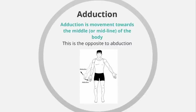Adduction is the complete opposite to abduction. If abduction was movement away from the midline, adduction is movement towards the midline of the body. Using the example of the star jump again, this would be the lowering or inward phase — the arms have come from an outstretched position and are moving towards the body, and the legs are also moving together towards the body.